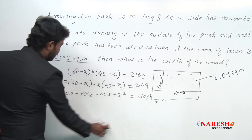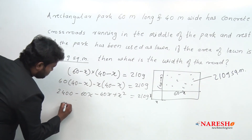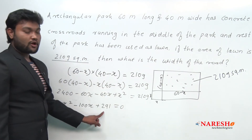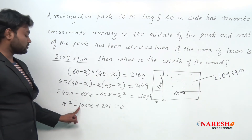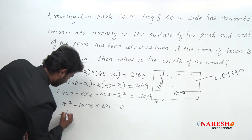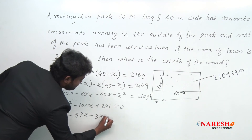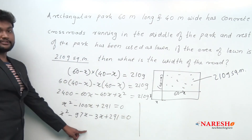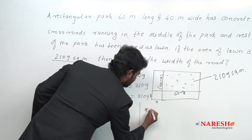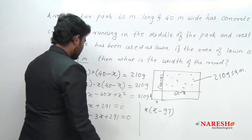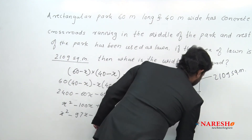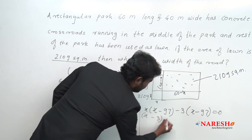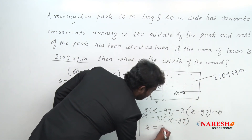We subtract 2109 from 2400 to get: x² minus 100x plus 291 equals 0. Factoring 291, the split giving a sum of minus 100 is minus 97 and minus 3, so we write: x² minus 97x minus 3x plus 291 equals 0. Taking x common: x(x minus 97) minus 3(x minus 97) equals 0, giving factors (x minus 3) and (x minus 97).